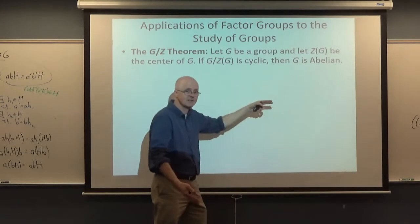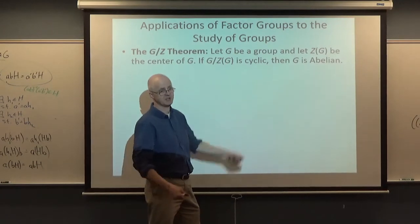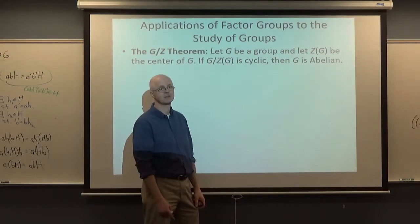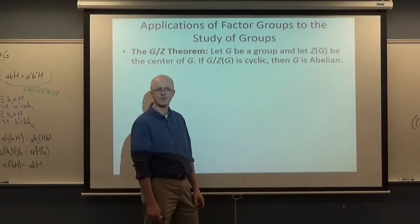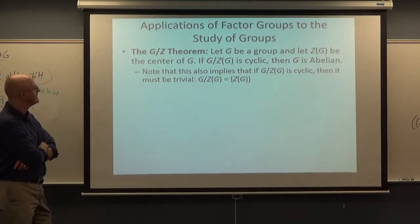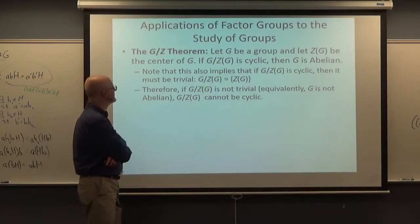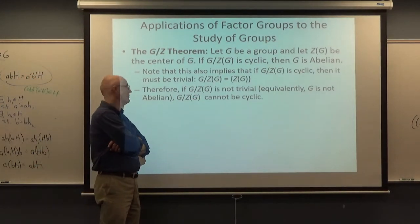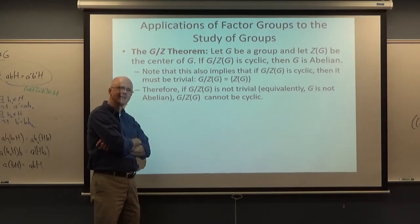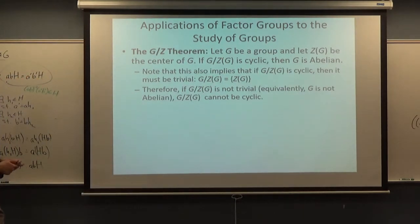Which would mean the center of G is all of G itself — not a proper subgroup — which would mean this factor group is actually trivial. So if the factor group G/Z(G) is cyclic, it must be trivial. Kind of a weird thing. And therefore, if G/Z(G) is not a trivial group, it cannot be cyclic.